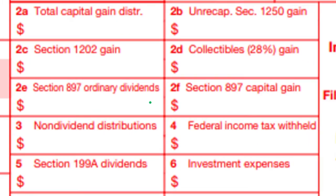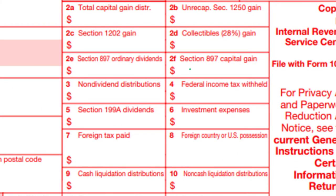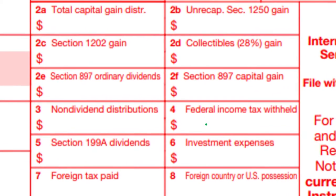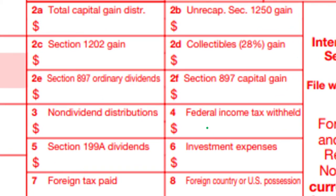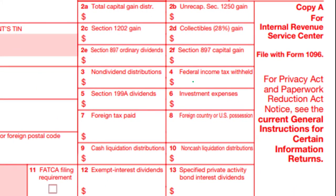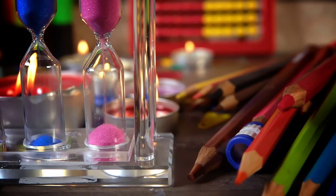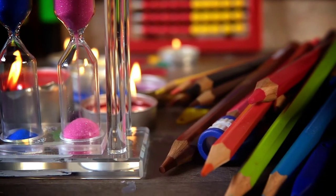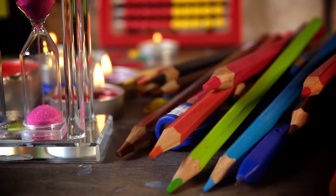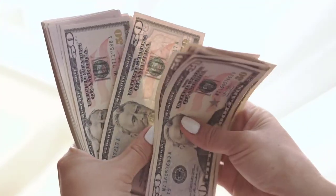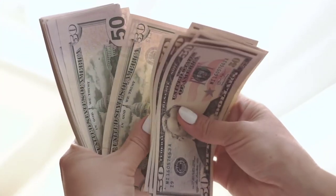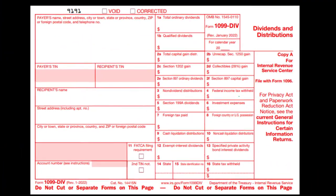Section 897 ordinary dividends, Section 897 capital gain, dividend distribution, and federal income tax withheld. You could have withholdings because a dividend is going to increase your income. However, you don't normally have withholdings here because most of the time people adjust their withholdings through their W-2 withholdings or possibly make quarterly payments. But you can imagine a situation where you'd take withholdings out on the dividend.